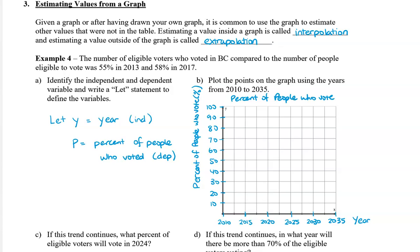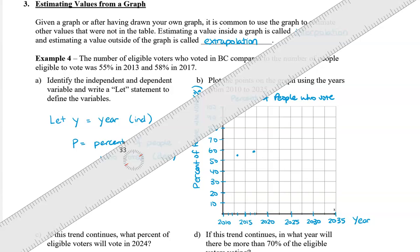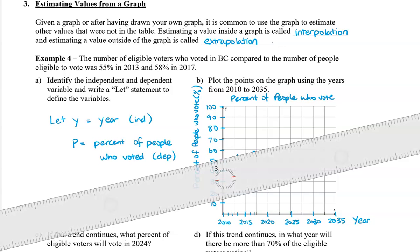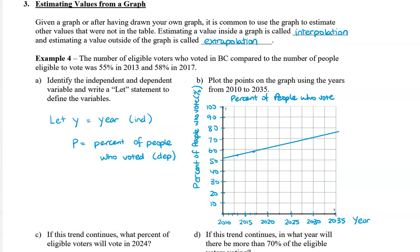We only have two points, so we're going to plot those two. In 2013, at 55%, so that's right in the middle. And in 2017 at 58%, so it's a little bit higher — I'm going to plot my point there. Then I'm going to grab my ruler and connect these two points, drawing the line through the two points and across the entire grid.